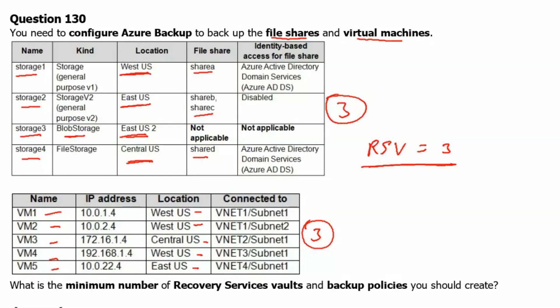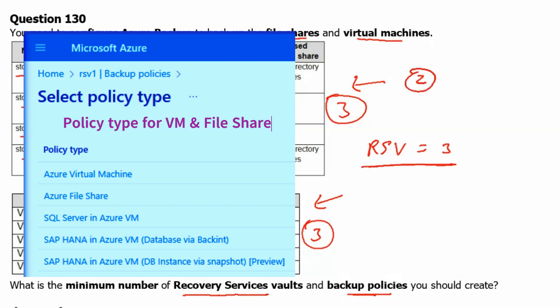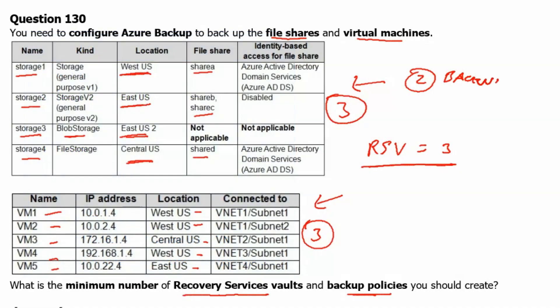The second question is how many backup policies should we create? A backup policy is associated with a recovery service vault and a resource type. We have two resource types: storage and virtual machines. Therefore, for each recovery service vault we require two backup policies, giving us a total of six backup policies across three vaults.